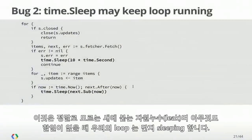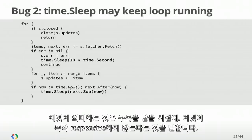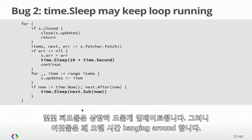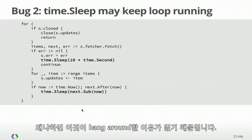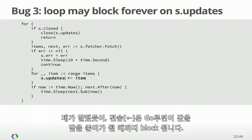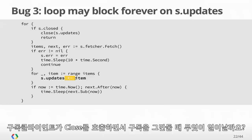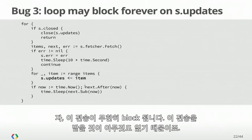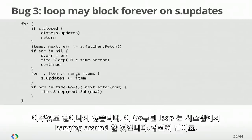The second bug is a resource leak: our loop is just sleeping when it has nothing else to do, which means it's not responsive when it's time to close the subscription. This might not seem like a big deal, but what if the next fetch time is tomorrow? Some feeds are updated rarely, so this goroutine could hang around for a very long time — it wouldn't clean up as soon as the user calls close. The third bug is the hardest to catch. Sends block until a goroutine is ready to receive. So when the client calls close and stops using the subscription, this send on updates will block indefinitely — there's no one to receive it. This loop goroutine will stay hanging around in the system forever.